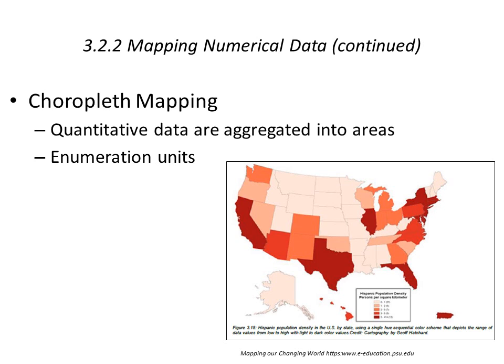In terms of choropleth mapping, quantitative data are aggregated into areas and then mapped out depending on the enumeration units. Enumeration units — which we'll talk about more in relation to the U.S. Census — basically refers to the geographic scale or unit that you're mapping: is it the county level, the census tract level, the state level, and so on?